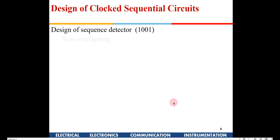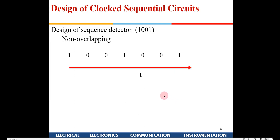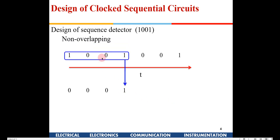I can also design a circuit depending on the user requirement. In a non-overlapping one, when I get 1, 0, 0, 1 I get an output, then the system gets a reset. Again it will start from here — that is the previous story. Now it will start 0, 0, 0, 1, and it will not give me a 1 because the previous last bit will not be considered. Hence it is known as non-overlapping.